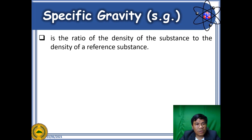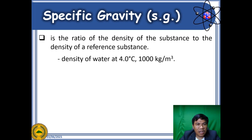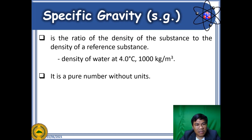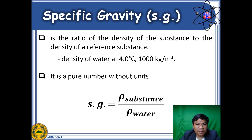There is a quantity closely related to density called specific gravity, denoted by Sg. Specific gravity is defined as the ratio between the density of the substance to the density of a reference material. In this case, our reference material is the density of water at 4 degrees Celsius, which is equal to 1000 kilograms per cubic meter. Since specific gravity is a ratio between two densities, it has no units. Mathematically, we represent specific gravity as rho of the substance over rho of water.